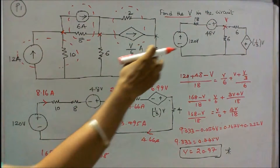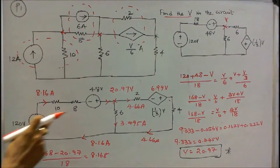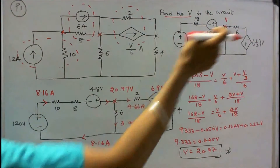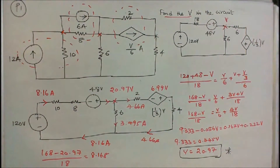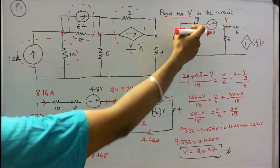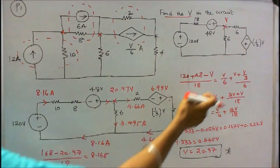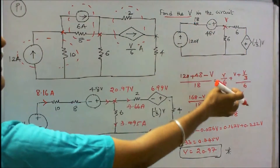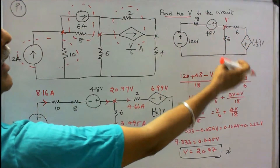Now I redraw the circuit. This is 120, this is 48, this is V/3. Now this is V — we have to find what is V. I write a nodal voltage equation: 120 plus 48 minus V divided by 18 (that is 10 plus 8) is equal to V/6 plus V plus V/3, all divided by 6.